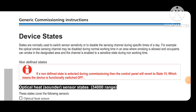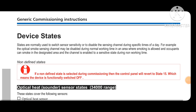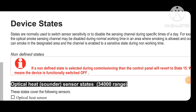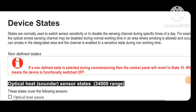Welcome to my channel. In this video I will tell you about device states of the Gent visual panel — the sensitivity of the devices of this Gent visual panel — and also about the troubleshooting of invalid configurations. Device states are normally used to switch sensor sensitivity or to disable the sensing channel during specific times of day.